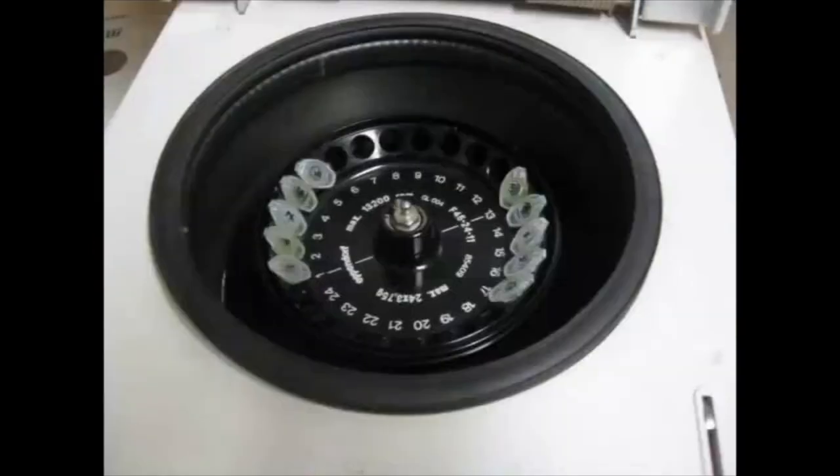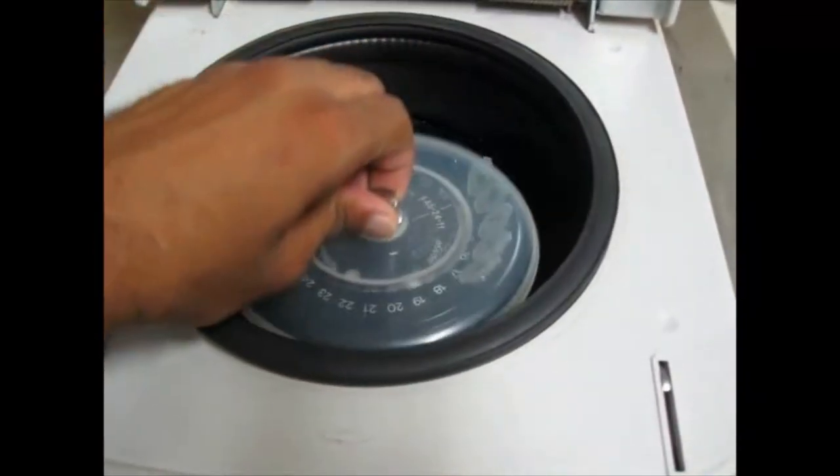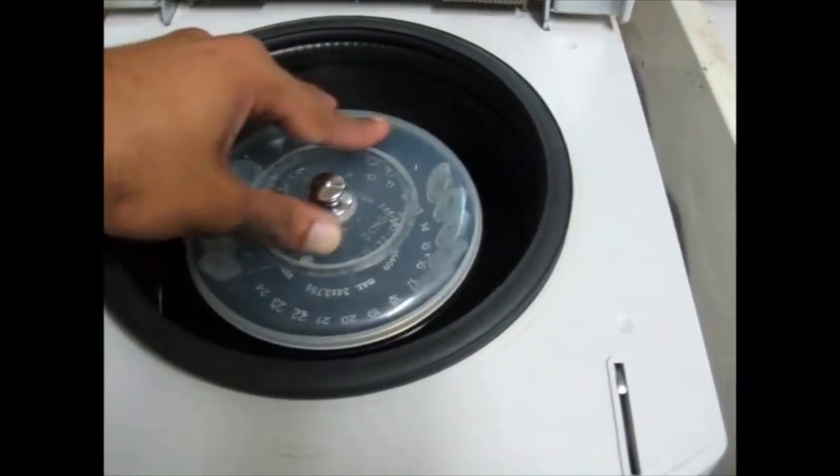For the sample, we would centrifuge the samples at 12,000 rpm for 20 minutes at more than 15 degrees Celsius. By doing so, separation of contaminants occurs according to its density.